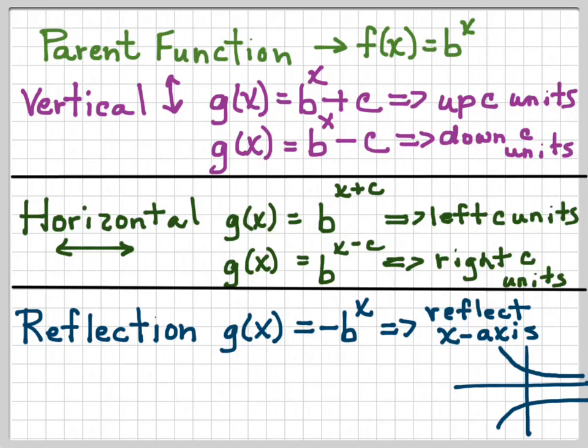So it's going to be the mirror reflection over the x axis. On the other hand, if we have b to the negative x, then we're going to have a reflection over the y axis. And we talked about this in the last video.